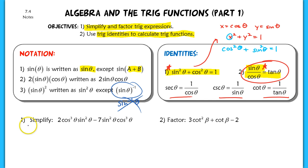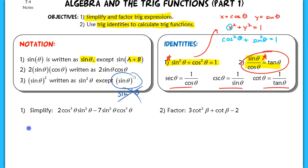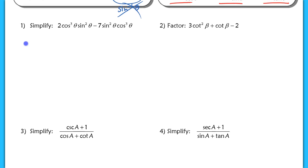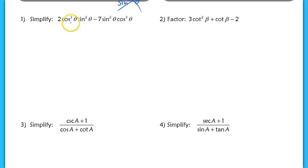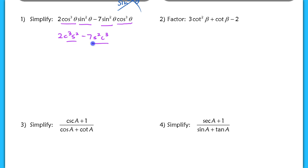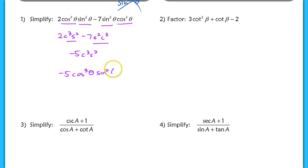The first example is actually a pretty easy algebra problem — it just asks us to simplify. Cosine cubed theta times sine squared theta might look complex, but if you treat cosine cubed theta and sine squared theta like variables, you essentially have like terms. Simplifying gives negative 5 c cubed s squared, which we rewrite as negative 5 cosine cubed theta sine squared theta. That's how we simplify this expression.